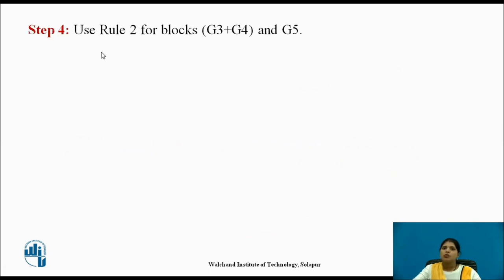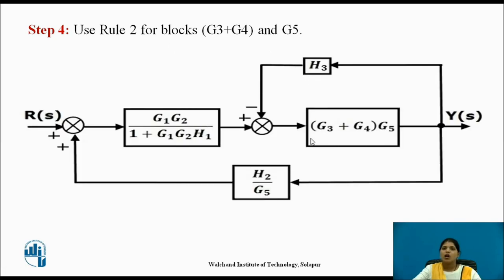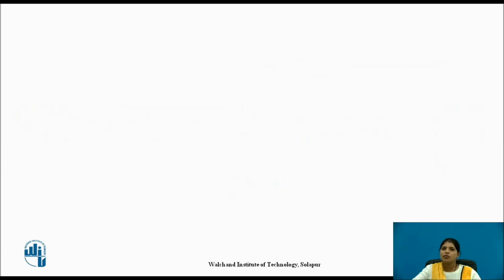Use rule 2 for blocks G3 plus G4 and G5. These blocks are connected in series, so they get multiplied — G3 plus G4 into G5. Now H3 is in feedback with this block, so eliminate this feedback loop with the help of rule 4 again.